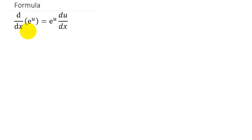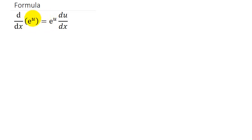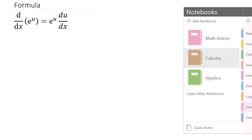In this video, let's take a look at finding the derivative of an exponential function where our base is e. The derivative of e to the u with respect to x is equal to e to the u times the derivative of the exponent. That's our formula.